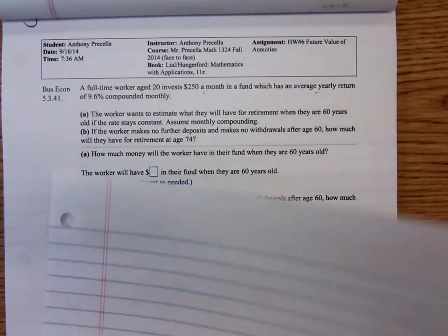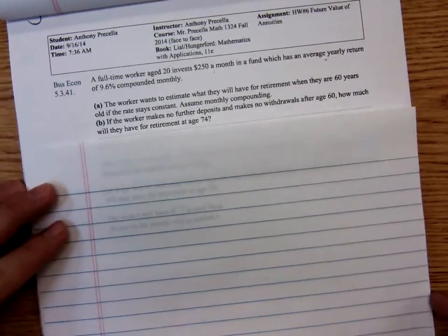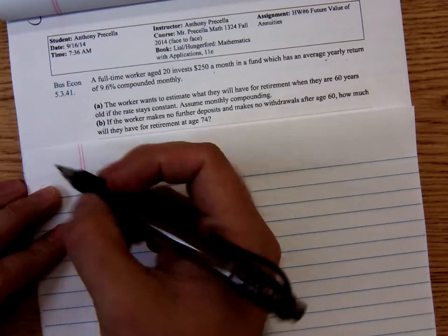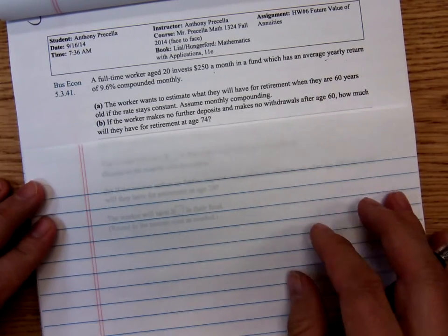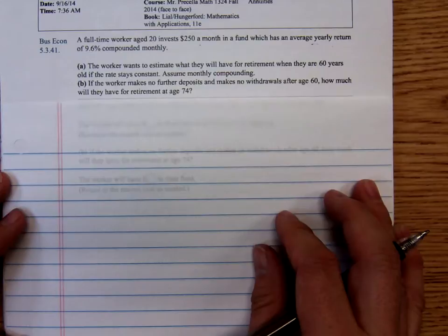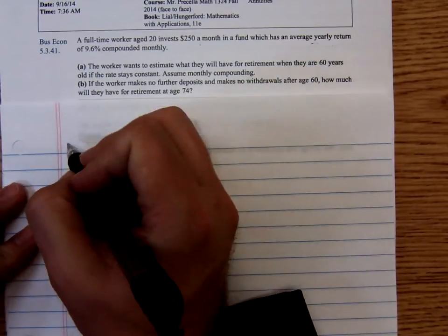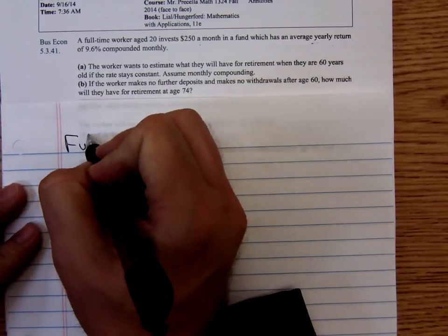We're saving for a future amount, so we're going to use the future value of an ordinary annuity formula.